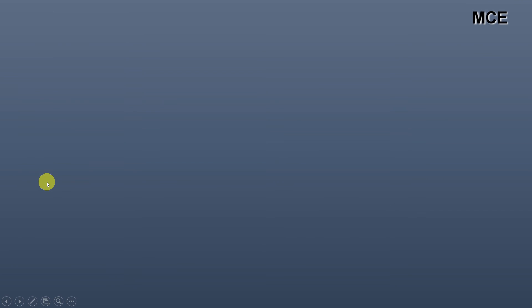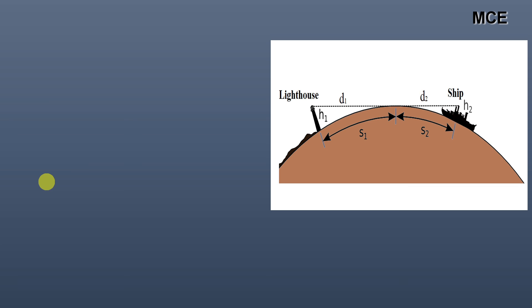Now the distance between the lighthouse and the ship is simply the summation of d1 and d2. Distance between observer and lighthouse = d1 + d2 = 24.38 + 9.44 = 33.82 kilometers. This is the distance between the observer and the lighthouse.